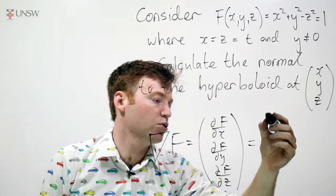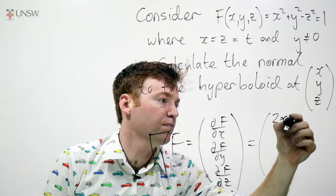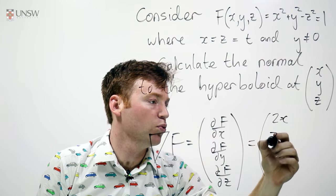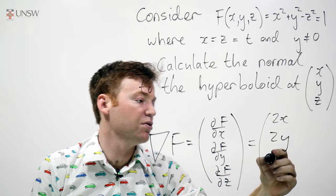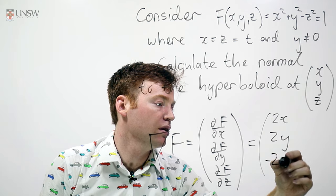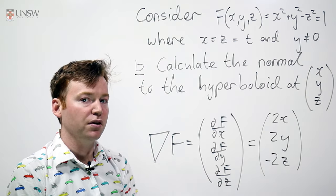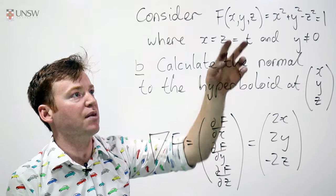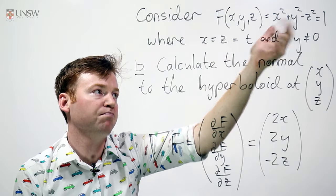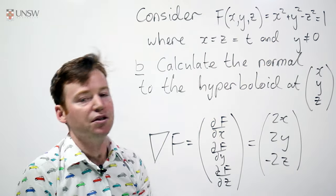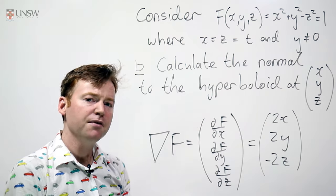Partial with respect to x is just 2x, partial with respect to y is 2y, and the partial with respect to z is negative 2z. This is the normal to a curve, which is described as f of variables equals some mess of the variables, which is equal to a constant. You may have seen this already.